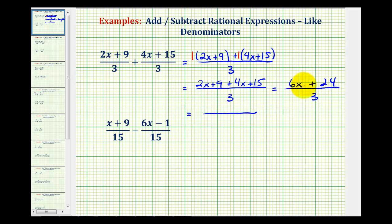Notice how there's a common factor of six between six x and twenty-four. So we'd have six times the quantity x plus four, all over three.